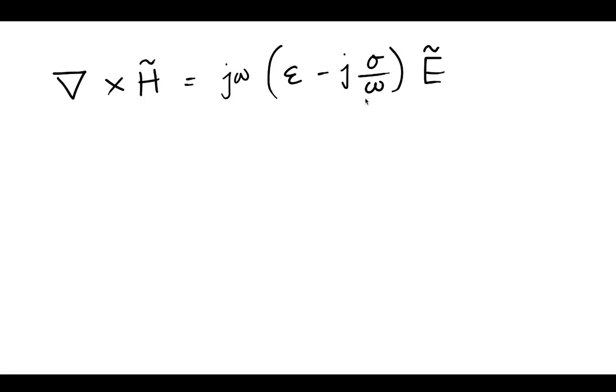Now, rearranging that, we have placed it such that we have the real part in front and then the imaginary terms second. And this is just like the way we like to write complex numbers in rectangular form, A plus jb.